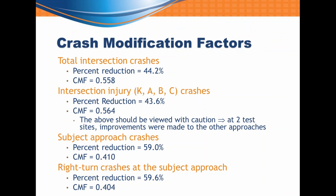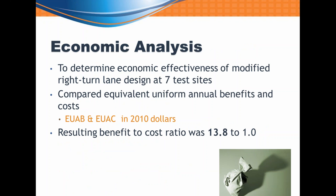Going back to the crash modification factors: you can see the percent reductions based on the EB method, and the related crash modification factors for all crash types. For total intersection crashes and intersection injury crashes, we have to view those results with caution because at two of the seven sites, some other improvements were made — we cannot attribute all of that percent reduction to the modified right-turn lane. But at the approach level, that's really where we can. The economic analysis ultimately provided a benefit-cost ratio of 13.8 — the crash benefits outweigh the cost of the improvement by a factor of nearly 14.